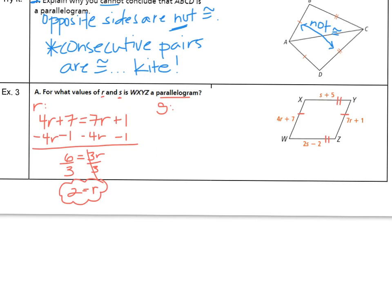But we also need to figure out what S will equal. So XY is equal to WZ. This means S plus 5 has to equal 2S minus 2. I'm going to subtract the S on the left and move it over to the right. I'm going to add 2 over to the left. On that left side, 5 plus 2 equals 7. And on the right, 2S minus 1S just gives us S left over. If S equals 7 and R equals 2 then quadrilateral WXYZ will equal a parallelogram.